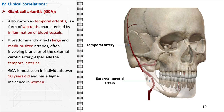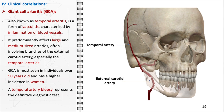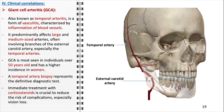Giant cell arteritis primarily affects individuals over 50 and has a higher predilection in women. This demographic detail is crucial — it should raise our index of suspicion and prompt thorough evaluation in older patients who present with symptoms like persistent headaches or visual issues. Diagnosing giant cell arteritis is not straightforward; it relies heavily on a temporal artery biopsy, the definitive test for this condition, which entails the removal and microscopic examination of a segment of the temporal artery to look for inflammatory markers including the characteristic giant cells.